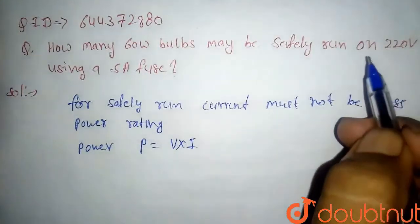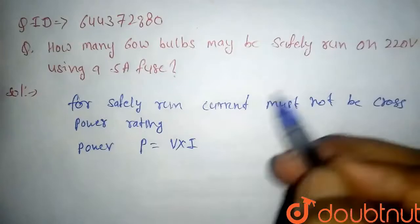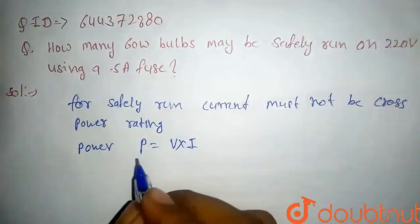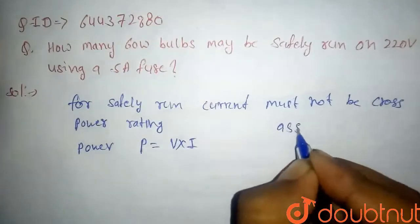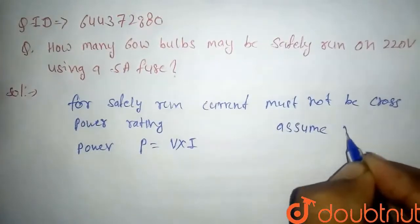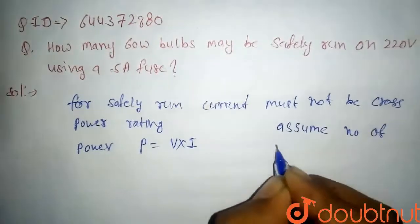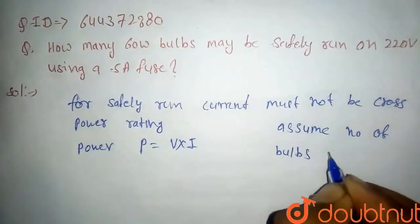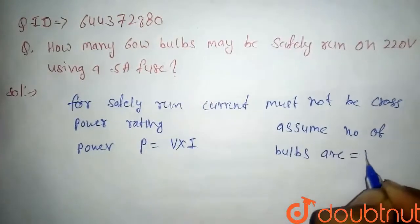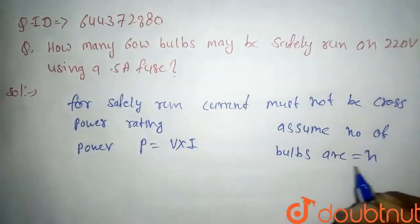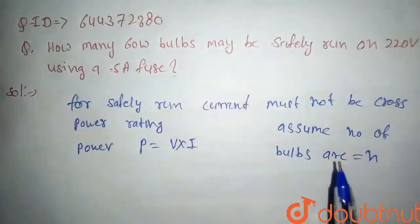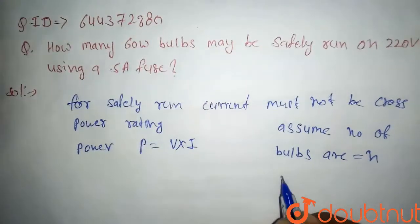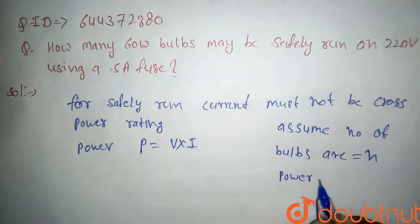we have the voltage and we have the current, so what will be the power? If we assume the bulbs are n, so the number of bulbs are n. We have to find out how many number of bulbs, so I assume n. What is the power? Power will be